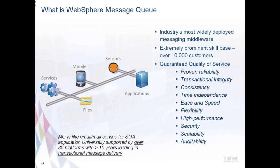Chart number 12 shows you the different quality of service which Message Queue guarantees. As you can see in the graphic there, we have different kinds of endpoints we could connect to, like sensors, mobile services, files, applications, and many others.